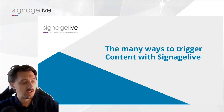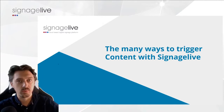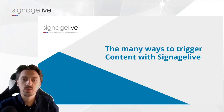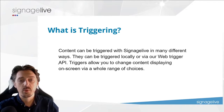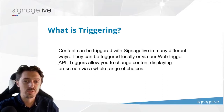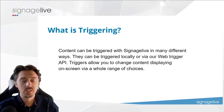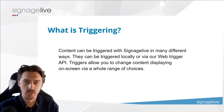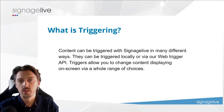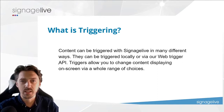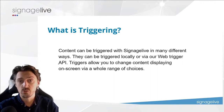We're going to take you through a bit of a high-level overview and then demonstrate how that sets up within Signage Live, talking around some case studies and how this is achieved out in the field. So to start off with, what is triggering? Content can be triggered within Signage Live in many different ways — locally or via a web trigger API — and triggers allow you to change content displayed on the screen via a whole range of choices.